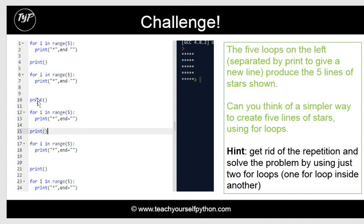Here's a challenge. This is a for loop, and this is quite a difficult challenge really, but you have a range of different for loops which are producing five stars and five rows of five stars each. Would you be able to get rid of the repetition? Whenever you see something being repeated, it means you should be able to condense it down. Would you be able to condense it down? If you've read the hint, it would involve having one loop inside another, which is quite difficult.